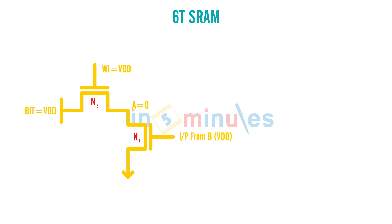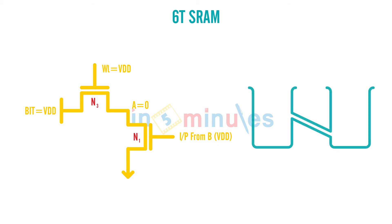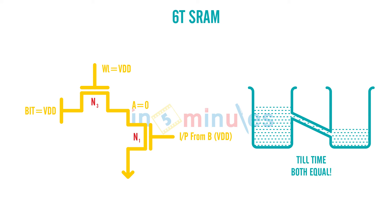Think of it like two tanks of water connected through a pipe: if one tank has more water than the other, the water flows from the higher level to the lower level until both become equal. The same thing happens in electronics. The entry transistor has one terminal connected to VDD and the other connected to zero, so current starts flowing from higher potential to lower potential.